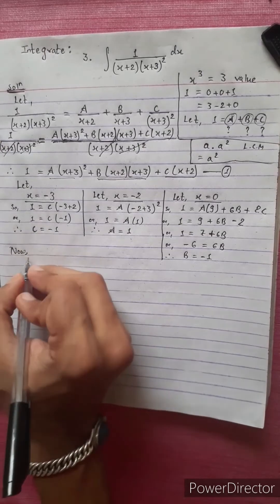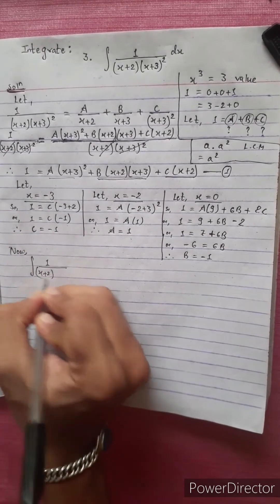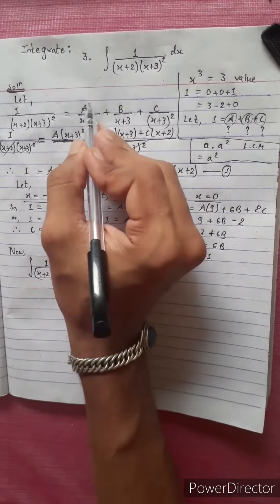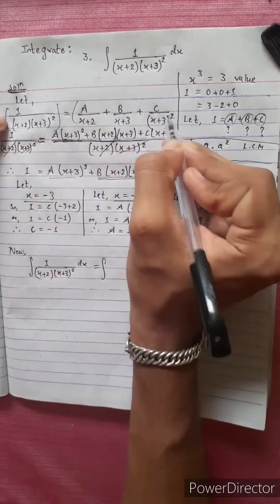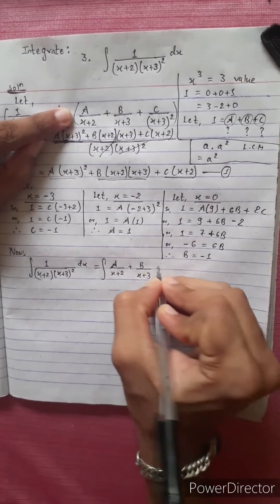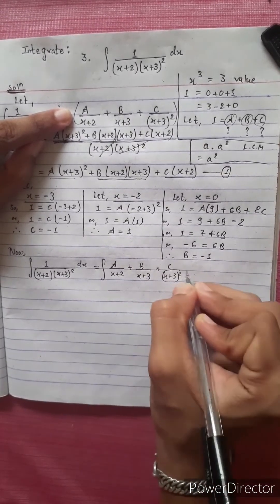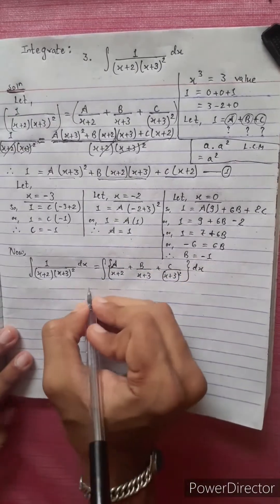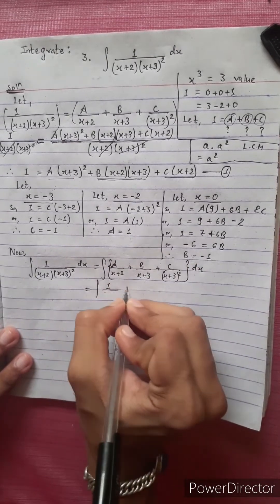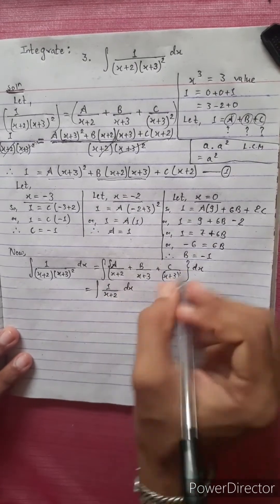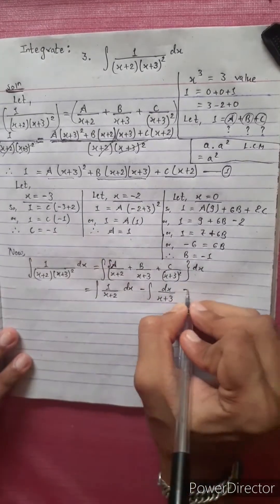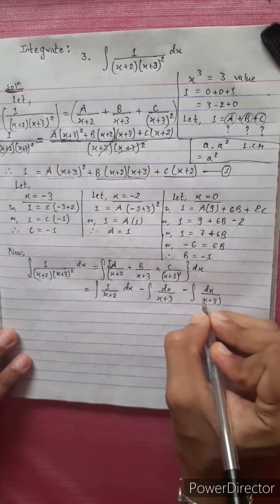Now let's do the integration. Integration of 1 divided by x plus 2 times x plus 3 squared dx equals integration of A over x plus 2 plus B over x plus 3 plus C over x plus 3 squared dx. With A equals 1, B equals minus 1, C equals minus 1, this becomes: integration of dx over x plus 2, minus integration of dx over x plus 3, minus integration of dx over x plus 3 squared.